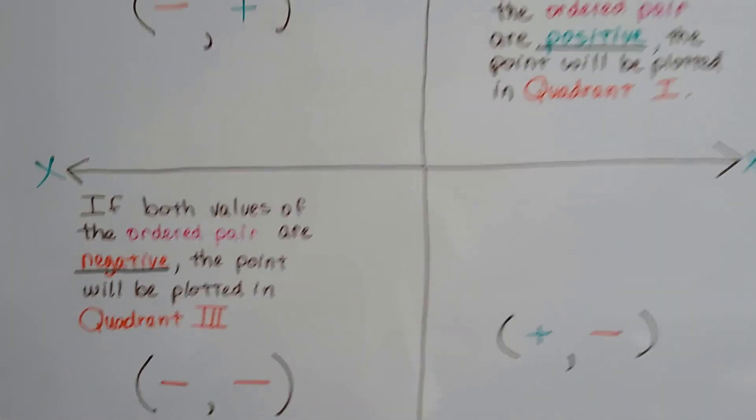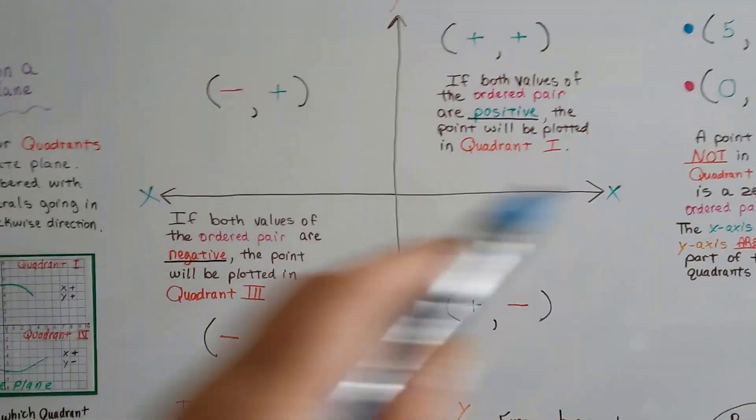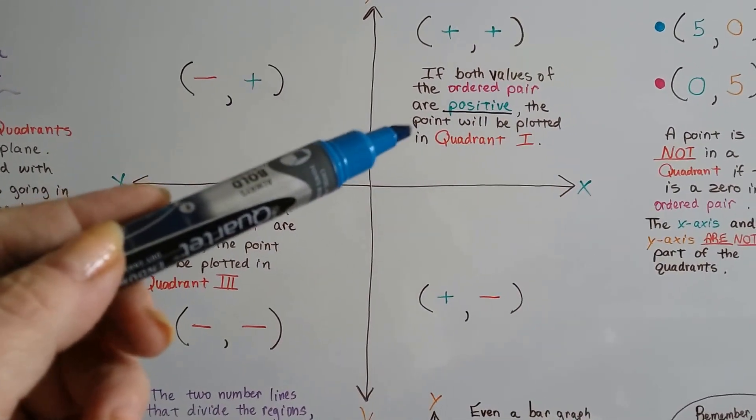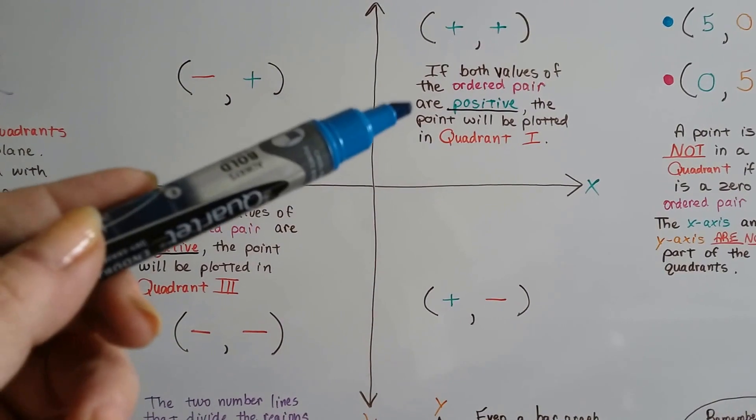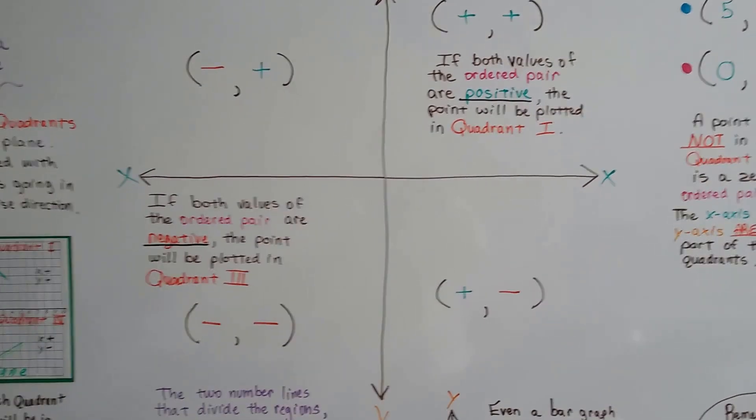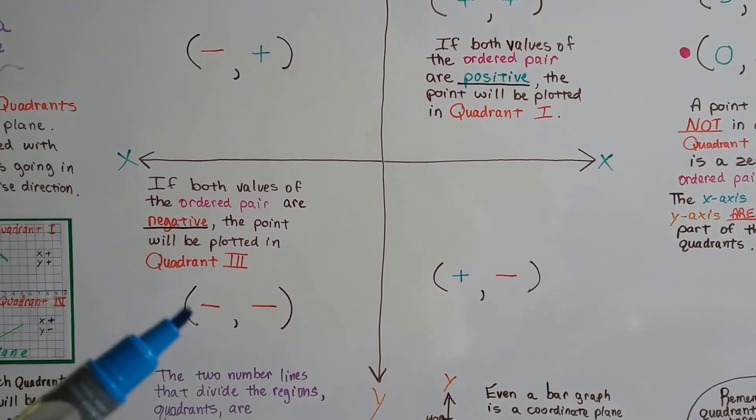So if you were to look at these two number lines, these two lines that go on infinitely in either direction, if both values of the ordered pair are positive, it's going to be plotted in quadrant one up in this corner where the c begins. And if both values of the ordered pair are negative, they're going to be plotted in quadrant three.